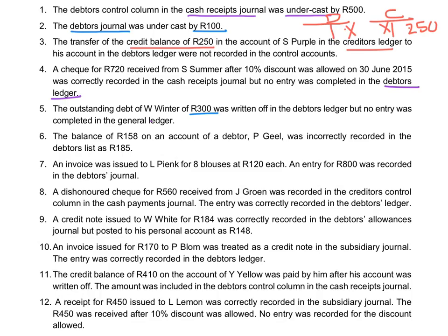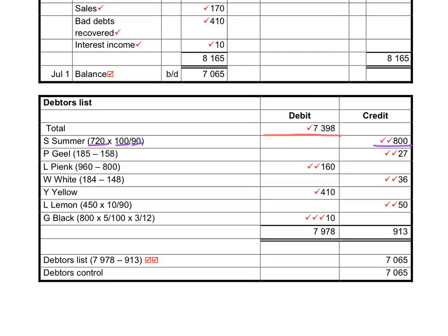The balance of 158 on the account of a debtor was incorrectly recorded in the list as 185. So there is a mistake only in the list and it will only be corrected there. The balance was recorded as 185 but should be 158, meaning we put too much on the debit side. We determine the difference between 185 and 158 and indicate that this debtor owes 27 rand less, correcting it on the credit side.